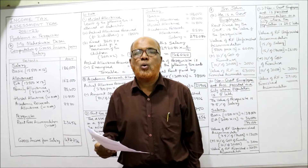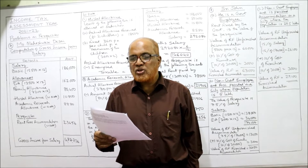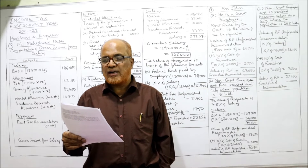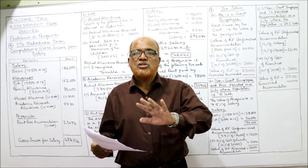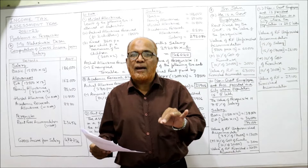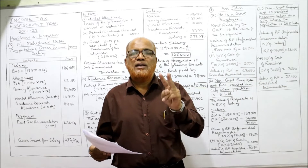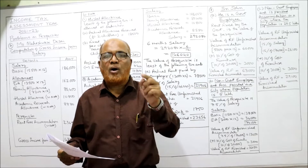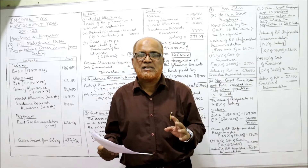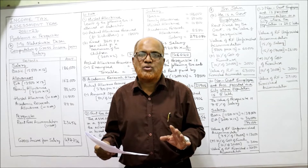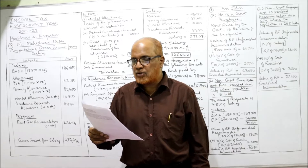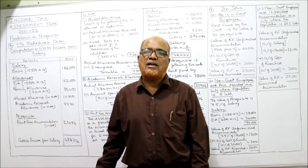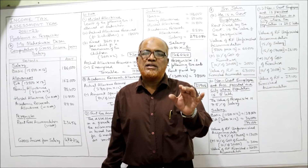The employee is provided with rent-free accommodation in Mumbai for six months only, so we calculate the perquisite value only for six months. The accommodation was hired by the company for 13,000 per month and furnished at a cost of 35,000. Since it's hired, we take the least of: actual hire charges paid or 15% of salary, then add 10% of furniture cost.